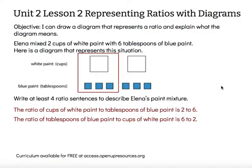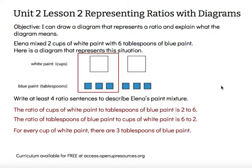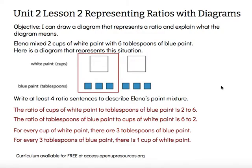Since this ratio has a one in it and is broken down into its smallest possible grouping, we can use the phrase "for every." So we say: for every cup of white paint, there are three tablespoons of blue paint. We can also reverse it: for every three tablespoons of blue paint, there is one cup of white paint.